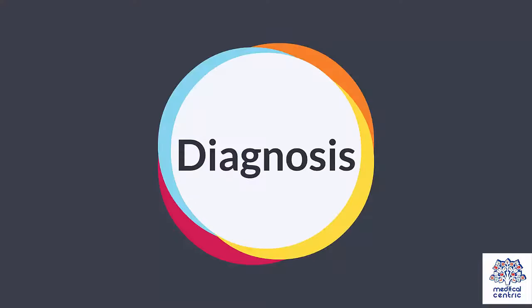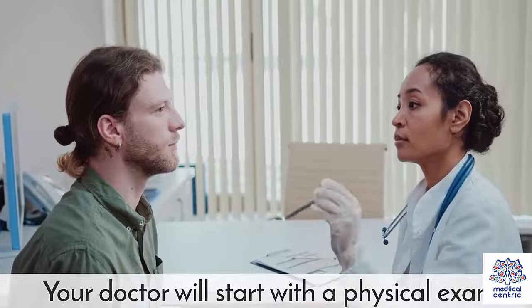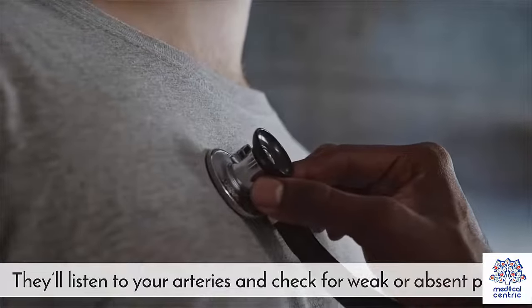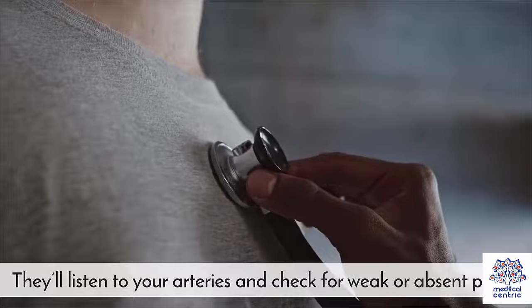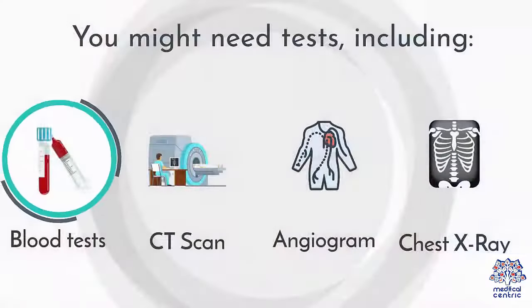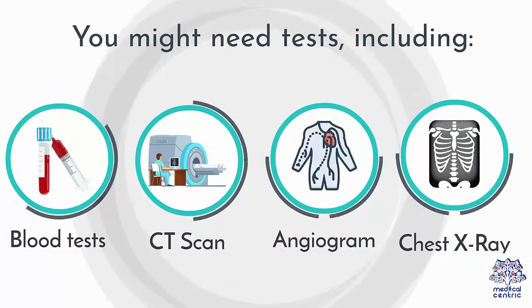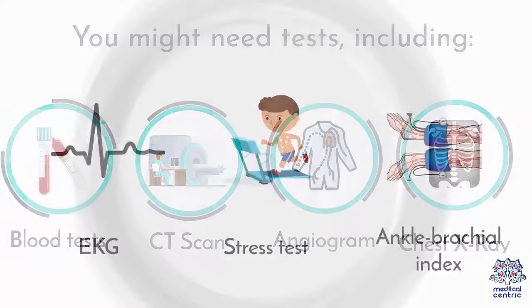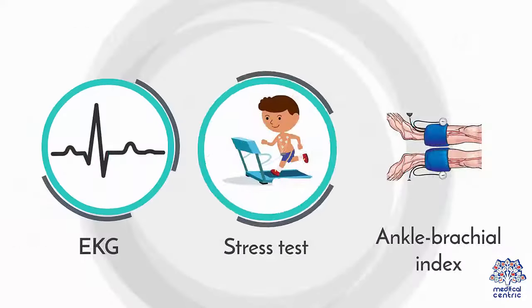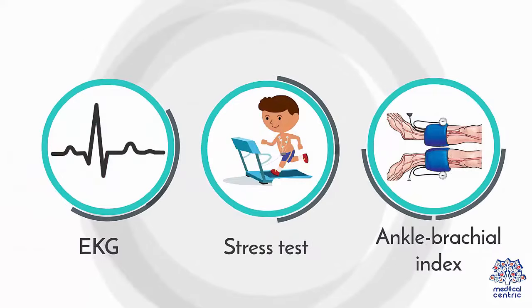Your doctor will start with a physical exam. They'll listen to your arteries and check for weak or absent pulses. You might need tests including blood tests, CT scan, angiogram, chest x-ray, EKG, stress test, or ankle brachial index.